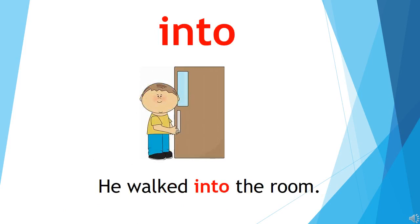The second word is 'into.' I hope children you are repeating after me. We use 'into' when we go inside of something, or something is inside of something. Like, we go towards our room, so we say 'I walked into the room.' For example, this boy is going inside the room, so the sentence is: 'He walked into the room.' If a train is coming to the station, we say 'The train chugged into the station.' So when some object is coming inside, we use 'into.'